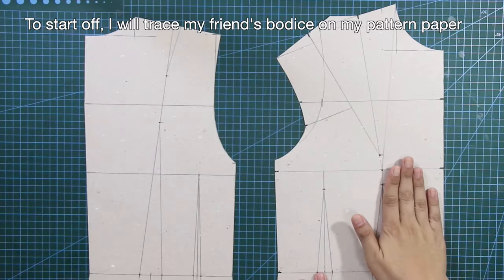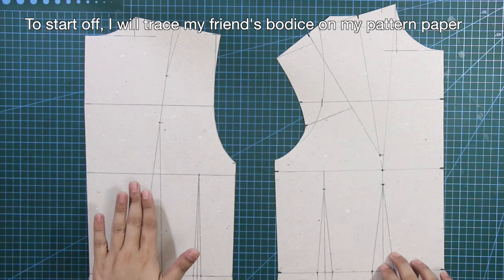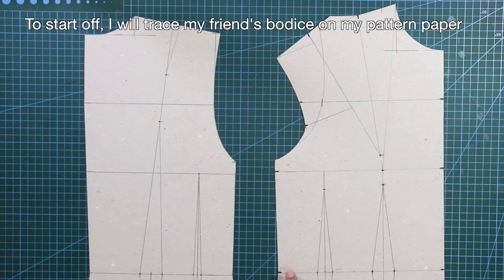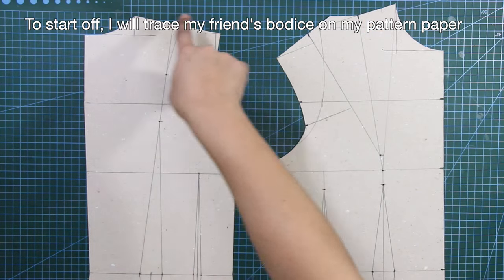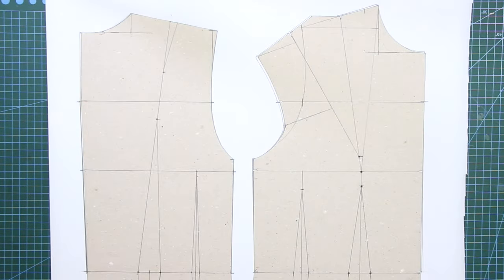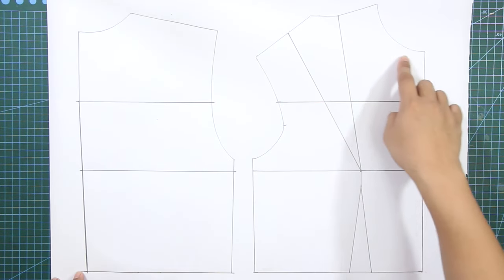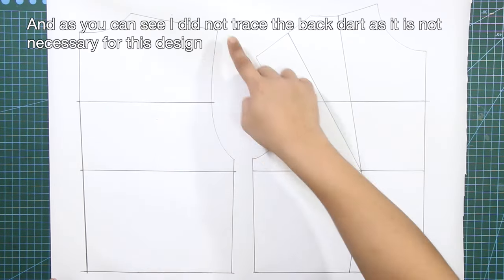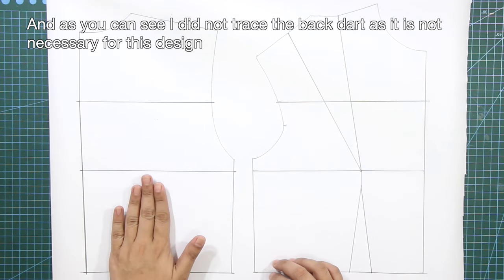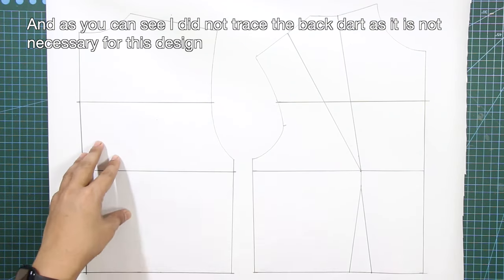To start off, I will trace my friend's bodice on my pattern paper. As you can see, I did not trace the back dart as it is not necessary for this design.